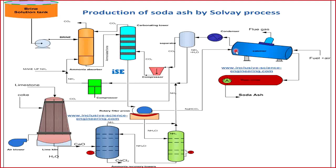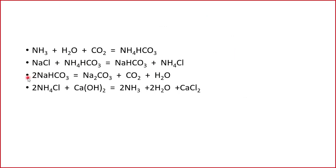Sodium bicarbonate is then sent towards the calcination section where the sodium bicarbonate precipitates are heated. As a result, we get sodium carbonate in solid form. In the calciner, the third reaction is followed: sodium bicarbonate decomposes into sodium carbonate, carbon dioxide gas, and water vapors. Sodium carbonate is the solid product while carbon dioxide and water are in the gaseous state.